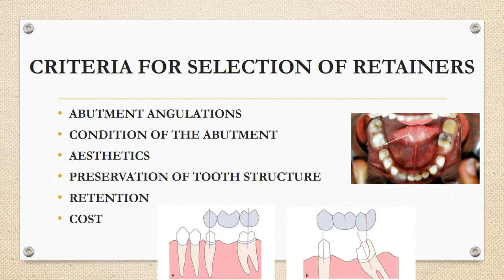Regarding condition of the abutment: if abutment teeth are in good health in terms of both periodontium and caries, a partial veneer retainer can be considered. If periodontal support is good and there are no caries, a partial veneer retainer is appropriate. However, if the abutment is endodontically treated or extensively damaged, a full veneer retainer is required. If the abutments are periodontally weak with root surface exposure, conservative resin-bonded retainers are used.